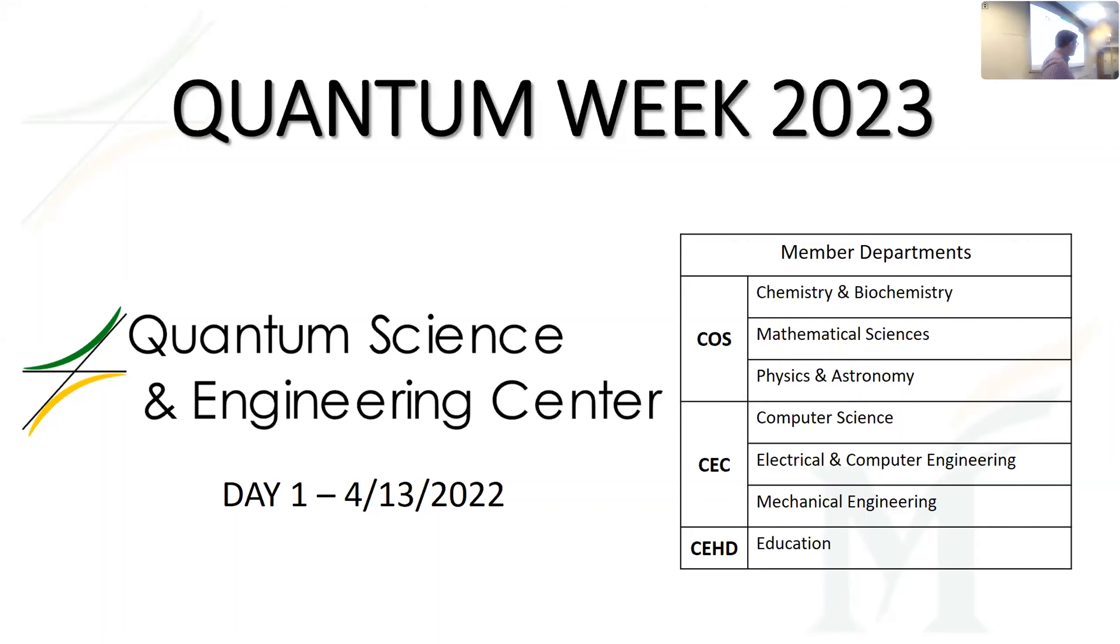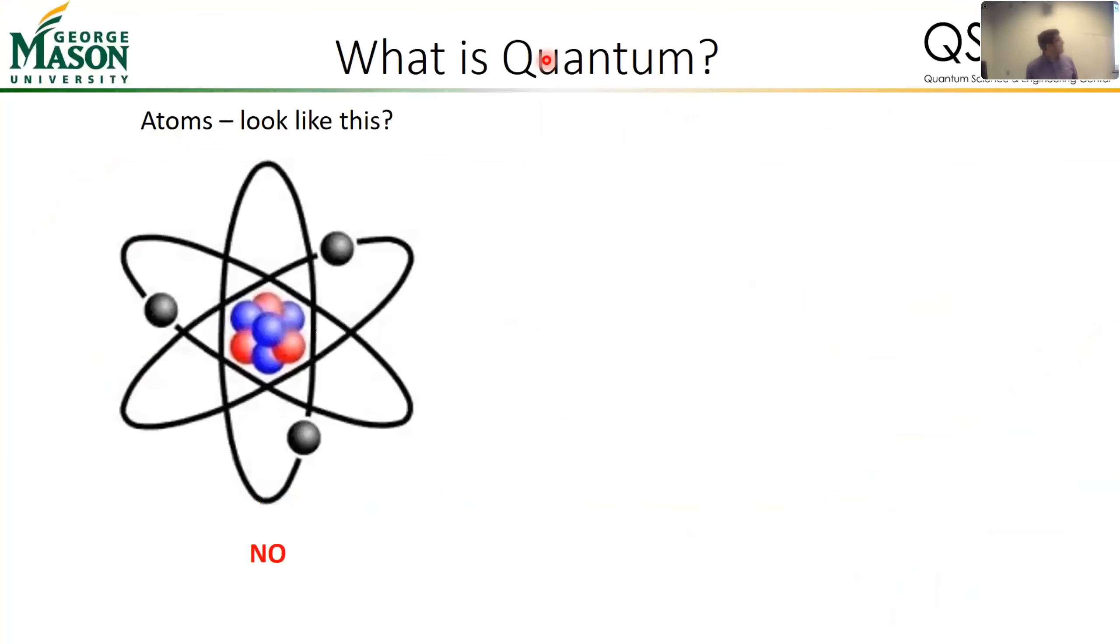At the core of our efforts here at George Mason University is our Quantum Science and Engineering Center. We've existed since 2018 and as you can see here, the departments here at George Mason that participate in our center are rather broad. We have members from chemistry and biochemistry, from math, physics and astronomy, computer science, electrical and computer engineering, mechanical engineering, and education. This should convey to you the scope of what quantum is.